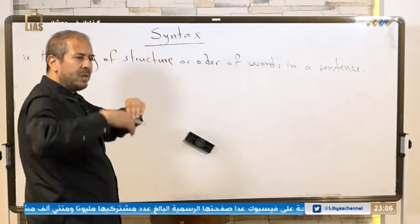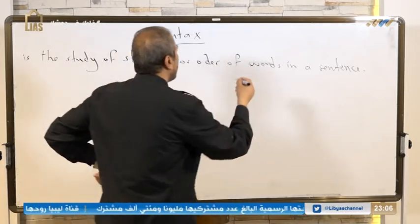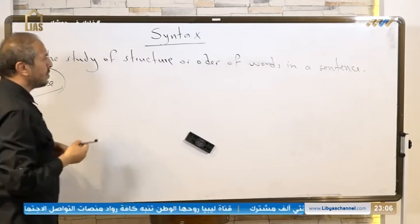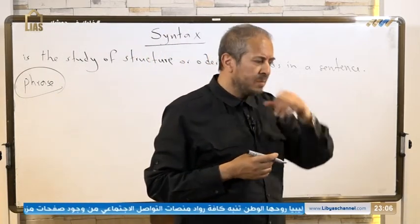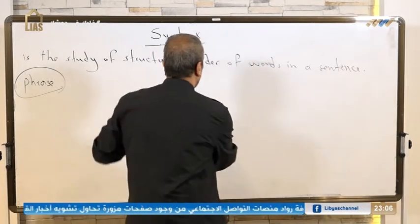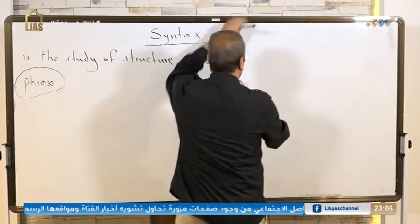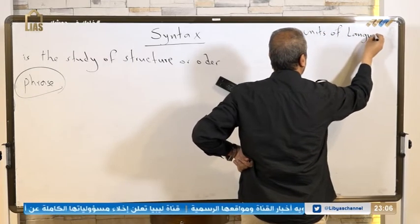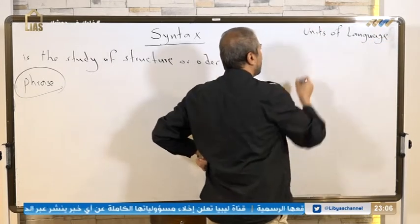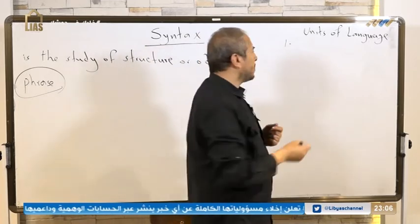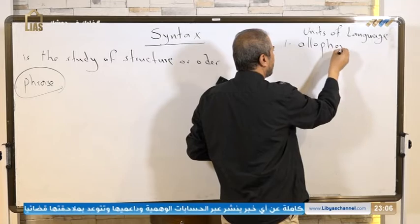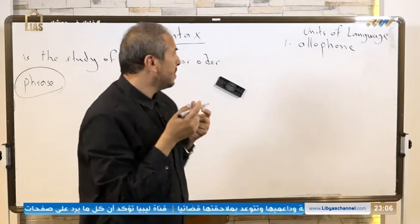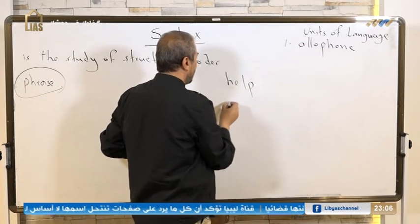Within syntax we are talking about levels other than words, so we have to talk about phrases. What's a phrase? To know a phrase, let's first look at what the units of language are. The first and smallest unit of language we call the allophone. Allophone is the smallest unit of language. Allophone means sound. For example, the 'p' in 'help' and the 'p' in 'please' are similar letters but have different sounds.